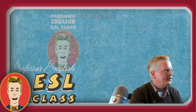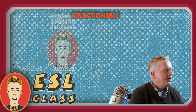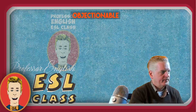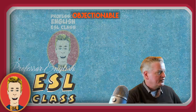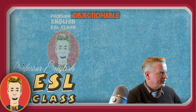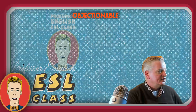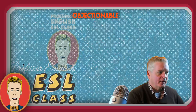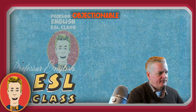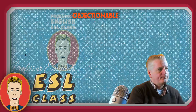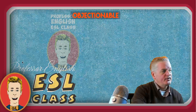Let's move on to another vocabulary word: 'objectionable.' This word is from chapter one of Charles Dickens' David Copperfield. It's an intermediate level vocabulary word, and it's an adjective used for something you don't like, something that makes you uncomfortable, or something that you don't agree with.